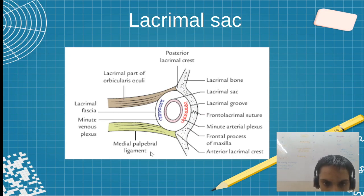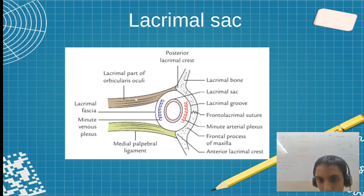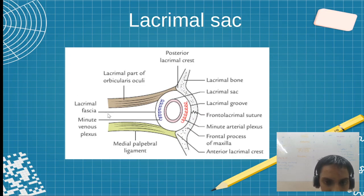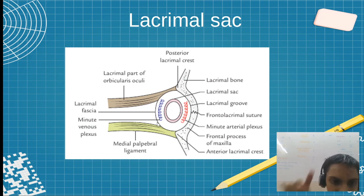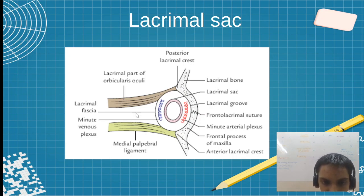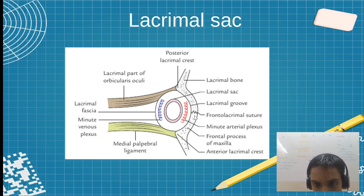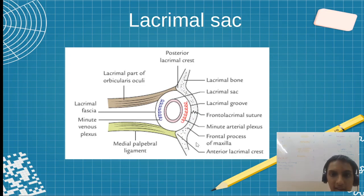Now we will go to the lacrimal sac directly. In the lacrimal sac, we can identify lateral, medial, posterior, and anterior relations. On the posterior side: the lacrimal part of orbicularis oculi. Anteriorly: MPL, the medial palpebral ligament. Laterally: the minute venous plexus and the outer covering lacrimal fascia. Medially: arterial plexus. Remember — laterally venous plexus, medially arterial plexus. Also, we can see the lacrimal bone, the frontal part, the frontal lacrimal suture, the frontal process of maxilla, and the lacrimal crest.